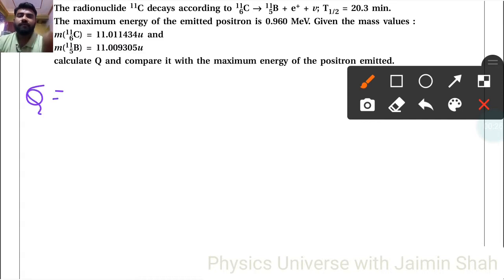So first of all, to find Q, the equation is: Q equals mass of carbon-6 C-11 minus the bracket of mass of boron-5 B-11 plus mₑ, close bracket.